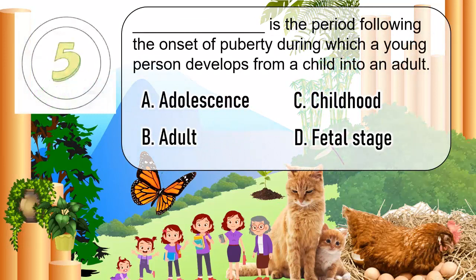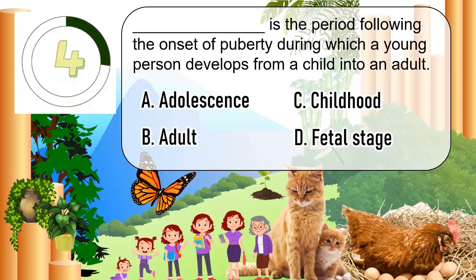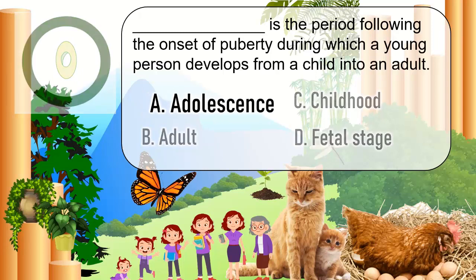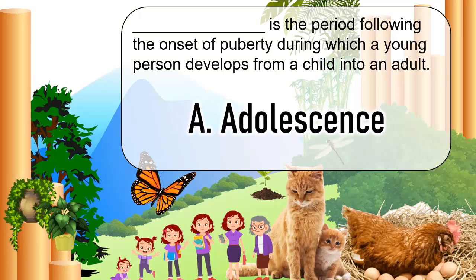Which is the period following the onset of puberty during which a young person develops from a child into an adult? A. Adolescence, B. Adult, C. Childhood, D. Fetal stage. The correct answer is A. Adolescence.